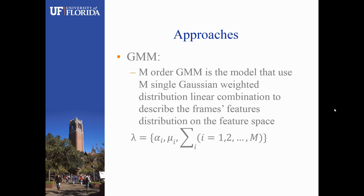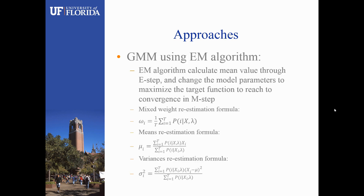For the GMM method, the M-order GMM is a model that uses M single Gaussian weighted distributions in a linear combination to describe the frame's features distribution on the feature space. The parameter set lambda contains the coefficients alpha, the means mu, and the covariances. In the GMM method, we will use the EM algorithm to calculate. The EM algorithm calculates the mean value through the E-step and changes the model parameters to maximize the target function to reach convergence in the M-step.